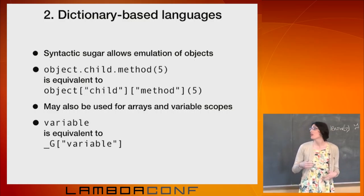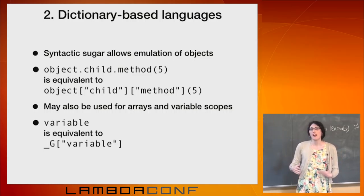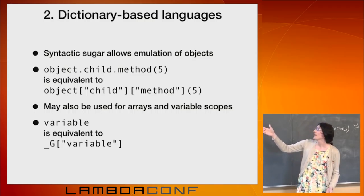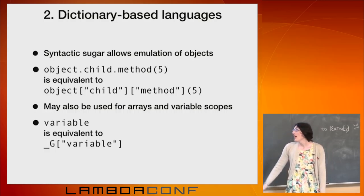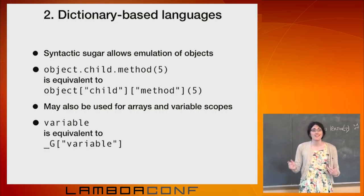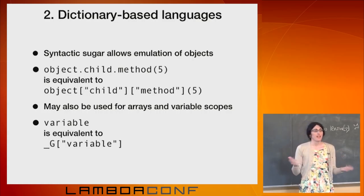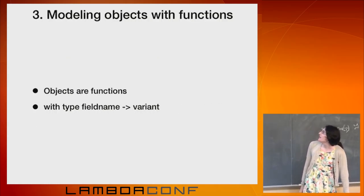In Python or in Lua, if you say object.child, what you're actually doing is you're looking up the string child, the key child, on object. It actually desugars to this second thing. And even more than that, some of these languages, actually the variable scope itself is just another dictionary. So if you type g by itself, you're actually looking up the string g on the scope dictionary.